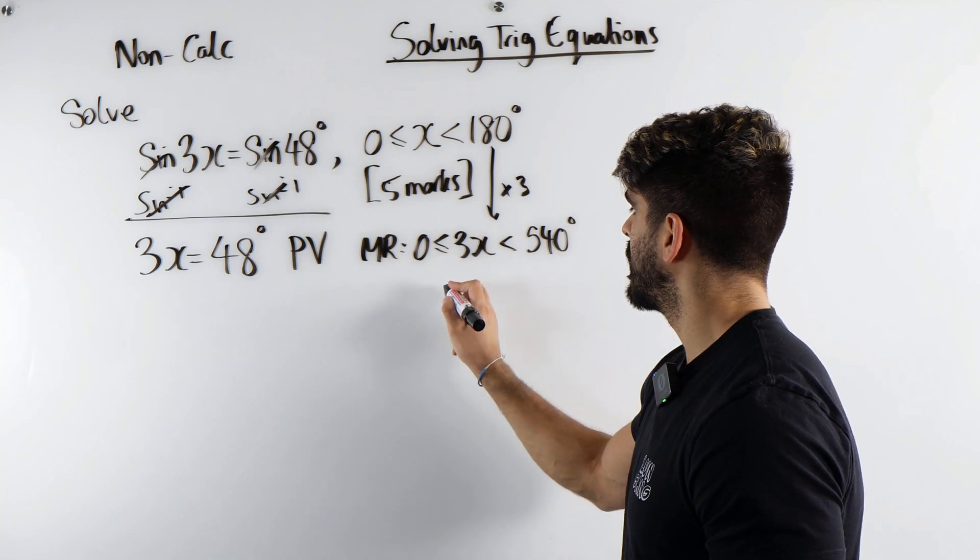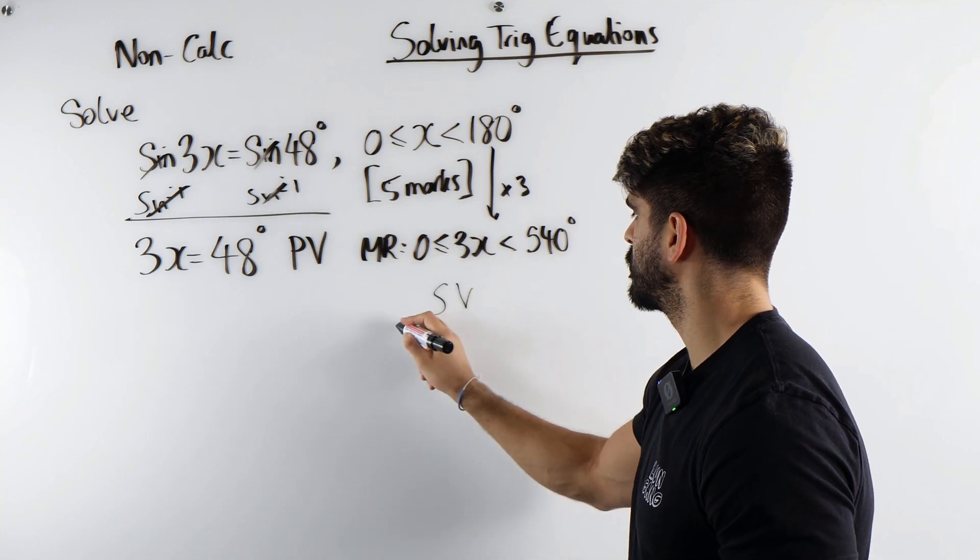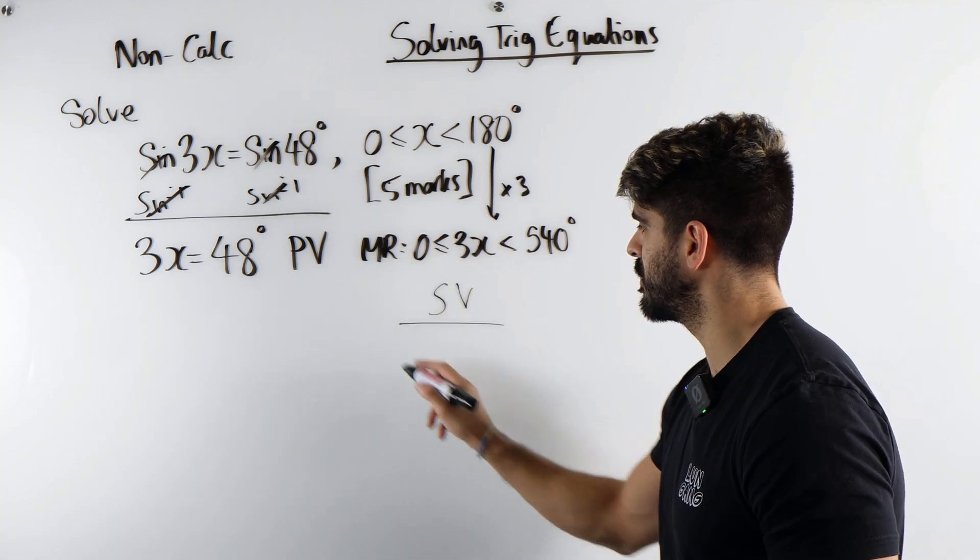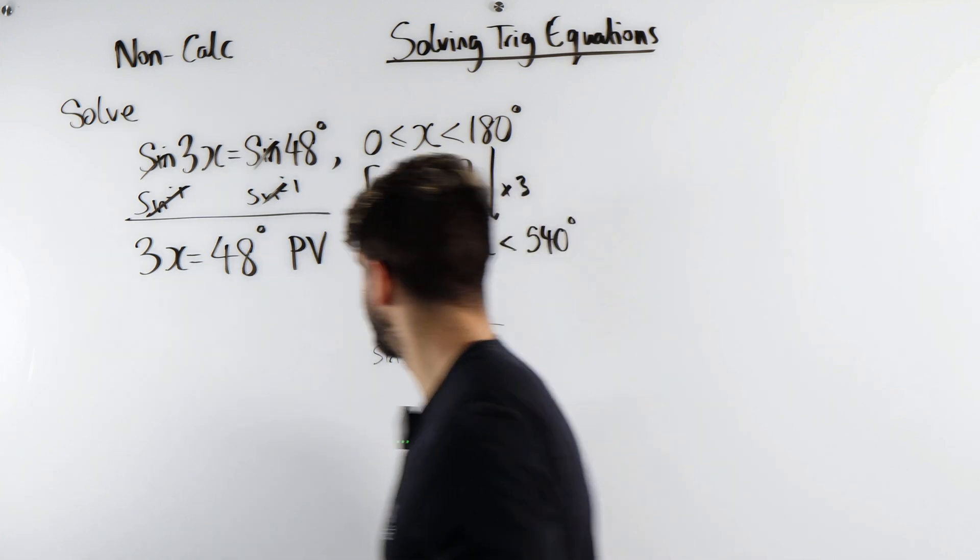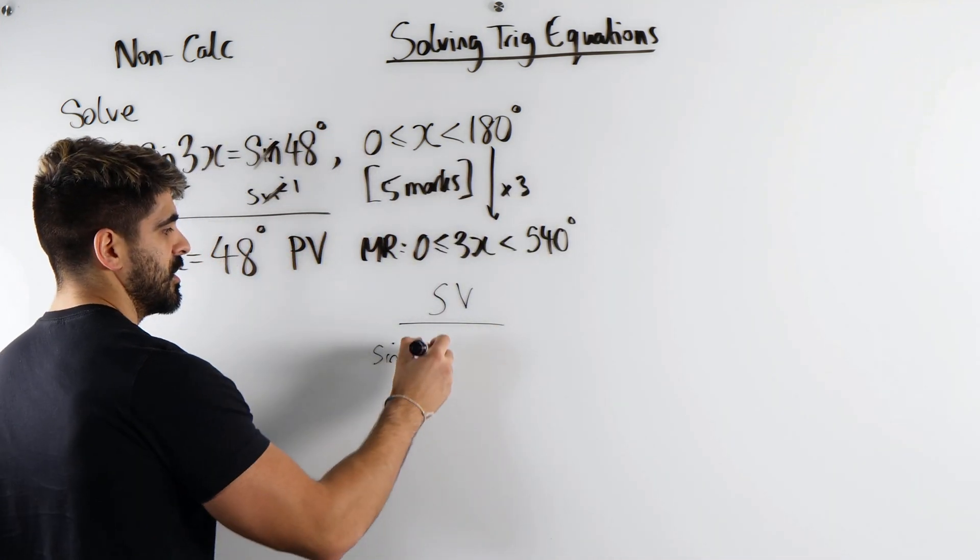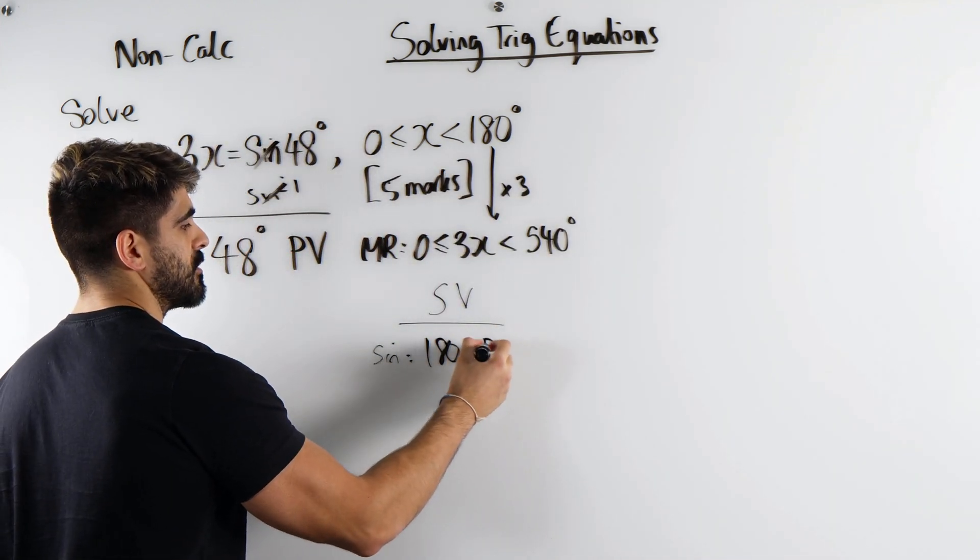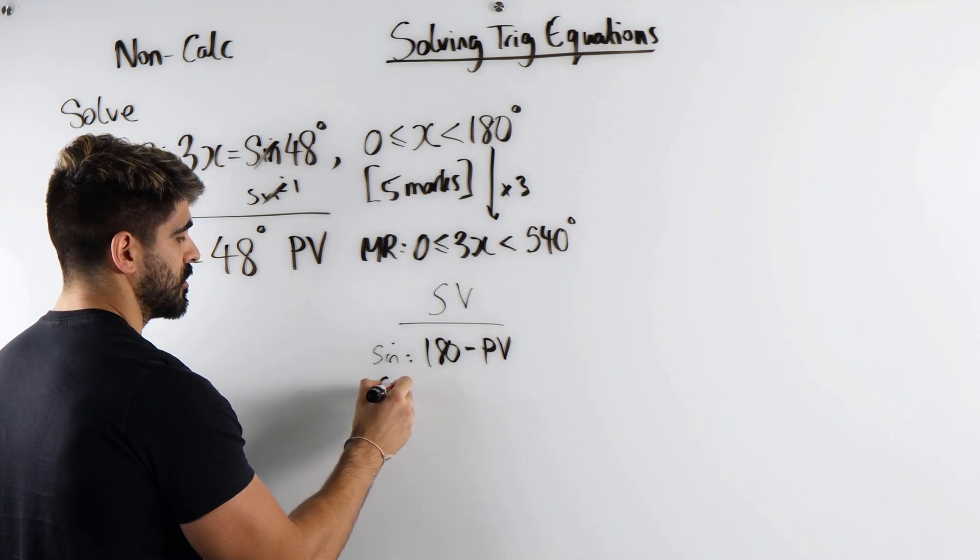So primary value, I'm going to show you how we work out the secondary value. The secondary value for sine is going to be the same thing every single time. For sine, you do 180 take away the primary value. For cosine, you do 360 take away the primary value.